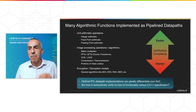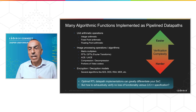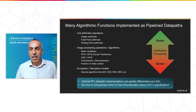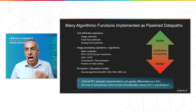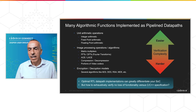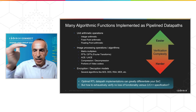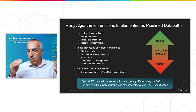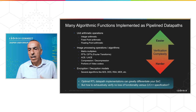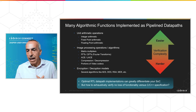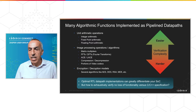These algorithms are also widely applied in image processing applications and encryption/decryption. In all of these applications, an optimal data path implementation can greatly differentiate the SoC. The question becomes how to verify exhaustively the specification against the implementation, and ascertain that the optimization in the RTL matches the C++ spec across all unknown data sets the data path implementation needs to process.